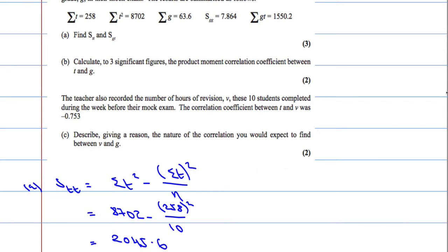And we're asked to work out S_GT. S_GT is going to be sum of GT minus the sum of G times the sum of T over N. So sum of GT, 1550.2, minus sum of G, which is 63.6, times by the sum of T, which is 258, all over N, which is 10. Again, another job for the calculator.